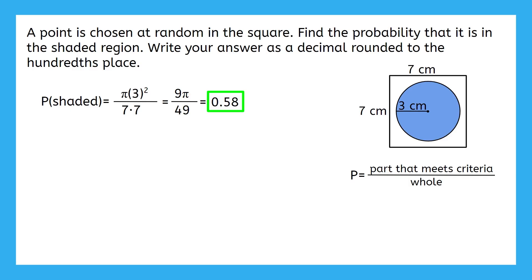Let's see if this makes sense. 0.58 is almost 60%. Does it look reasonable that the shaded circle takes up close to 60% of the square? Even if this wasn't drawn to scale, it's definitely not 90% or 10%. This seems reasonable, so we could be confident in our answer.